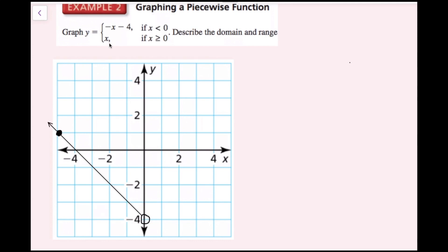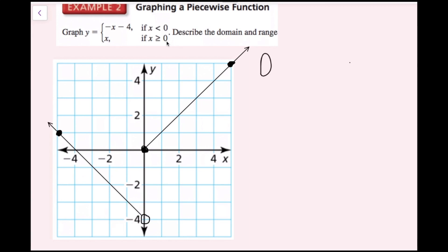Next is y equals x. The slope is 1 and the y-intercept is 0. Because 0 is included in the domain of the second part, I plot that y-intercept as a closed circle. My slope of 1 means right 1, up 1. I draw a ray going up and to the right. The given domain covers all real numbers — negative numbers for the first part, and non-negative numbers for the second.